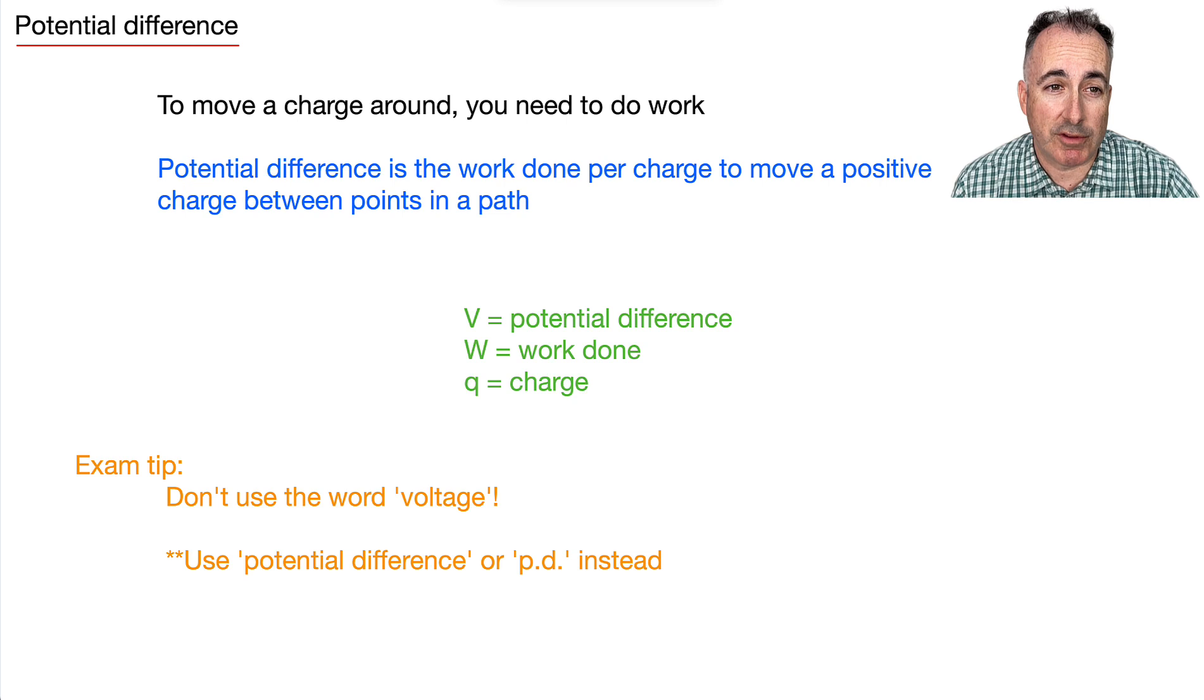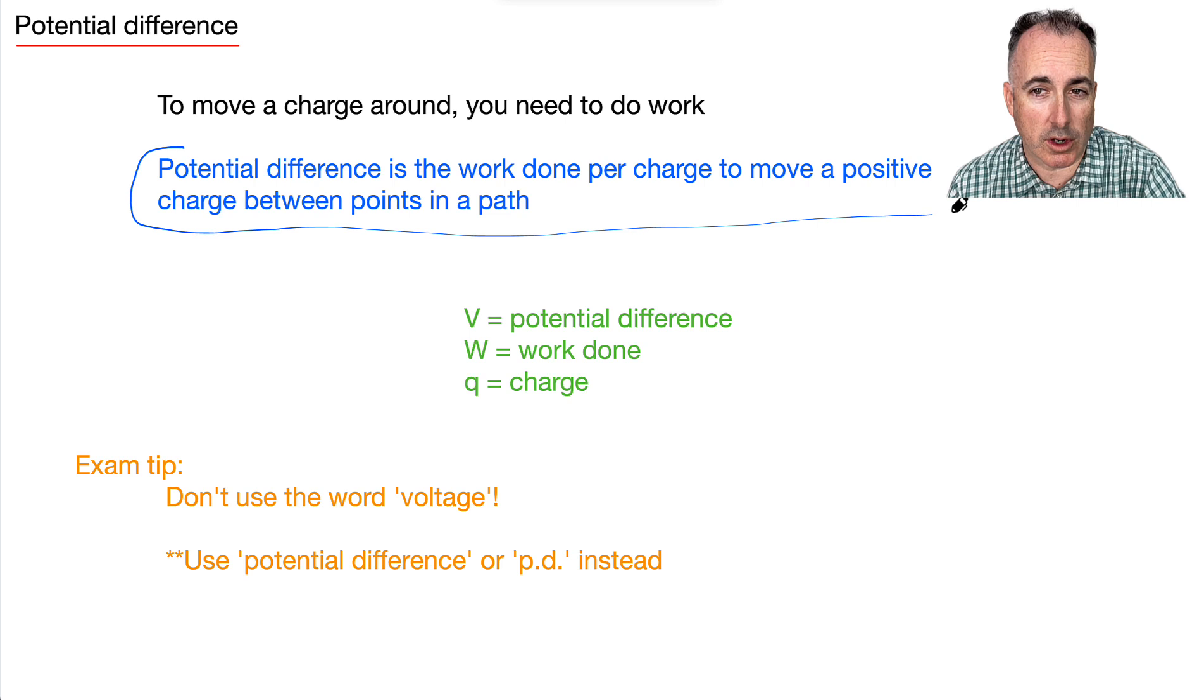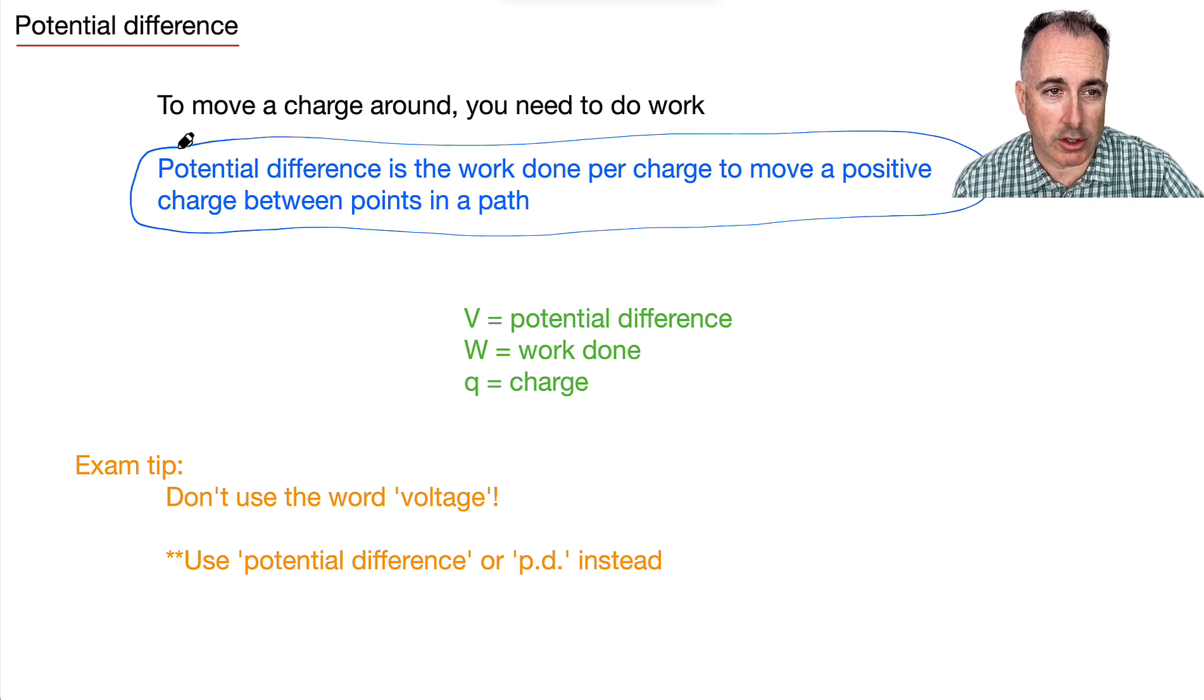So if we're going to be moving charges around, we have to do some work. The potential difference is going to be the work done per charge in order to move a positive charge between two points on a path. We have a nice equation for it in our data book. It just goes V equals W over Q.